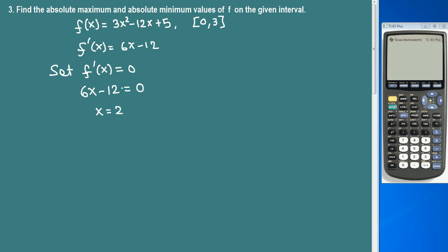So this is the critical number of this function and we need to make sure if this falls inside the given interval. 2, yes, this is inside [0, 3].